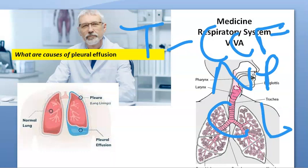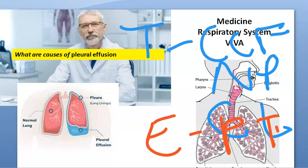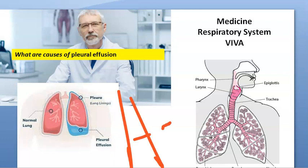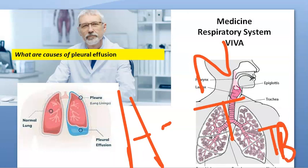Coming to exudative, it can be exudative if there is some infection like pneumonia, tuberculosis, carcinoma. Even asbestos, pancreatitis — all this can cause exudative pleural effusion. And then we can have hemorrhagic also. Hemorrhagic pleural effusion — that will be because of any neoplasm or some trauma. Even tuberculosis can cause hemothorax.